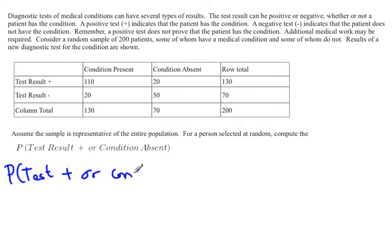So we've got this probability. Looking up here, there are 110 people that have condition present and positive test results. There's 20 people that have a positive test result and a condition absent. We can look at those 130 people.